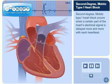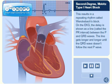Second degree Mobitz type I heart block occurs when a certain part of the heart's electrical signal is delayed more and more with each heartbeat. This results in a repeating rhythm called Wenckebach's block. On the EKG, the delay is shown as a line called the PR interval between the P and QRS waves. The line gets longer and longer until the QRS wave doesn't follow the next P wave.